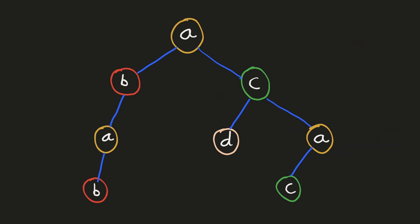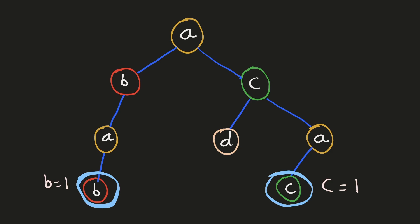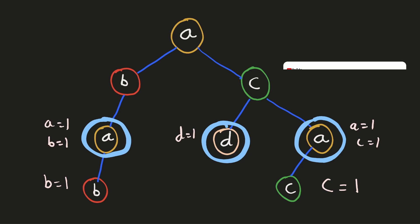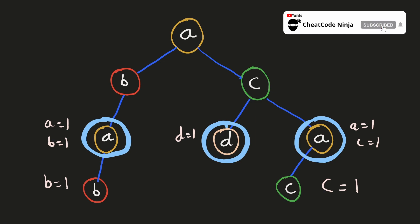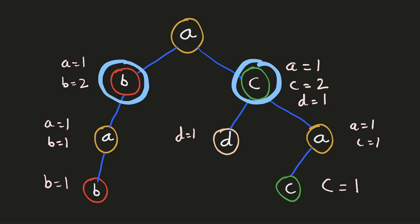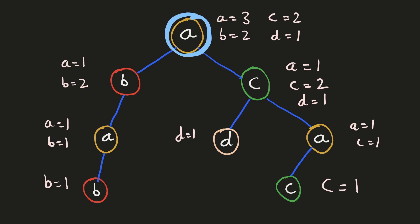We'll first start with all the nodes in the bottom row. They don't have any subtrees, so we'll just count their own labels and store their result. Now for the next level of nodes, we'll add 1 to the count of their labels plus the counts coming from their child nodes, and update their results. Similarly, these values will be used by their parent nodes, and finally we'll reach the root with the count of all labels in the tree. We'll calculate its result and return the result array. This logic can be implemented recursively using a depth first search.